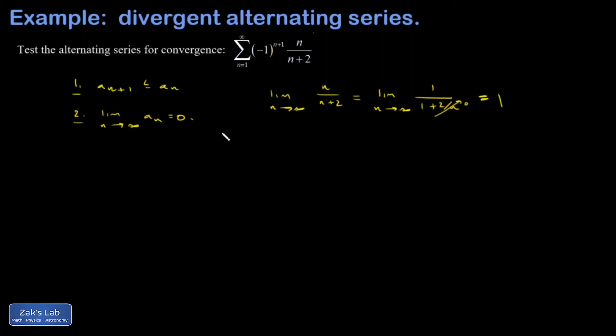And my limit is 1 here. So my limit as n goes to infinity of a_n did not go to zero, so this is a divergent alternating series.